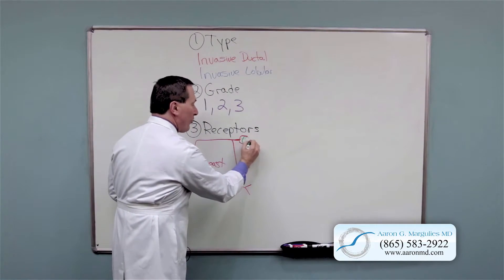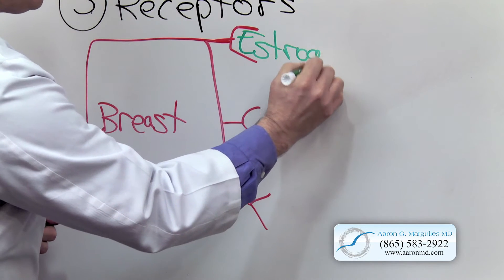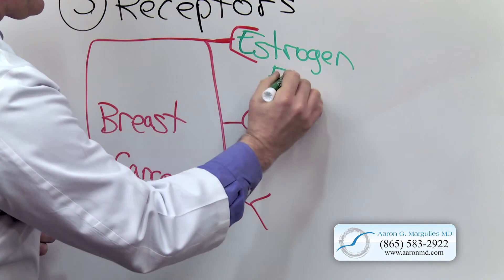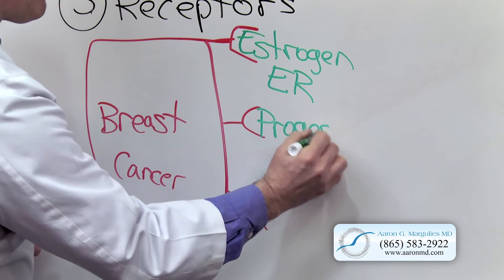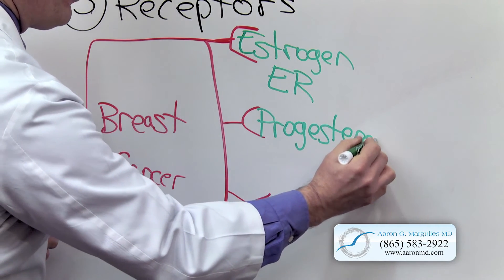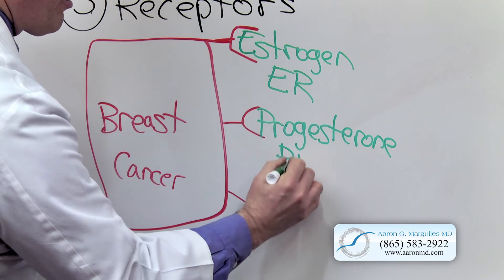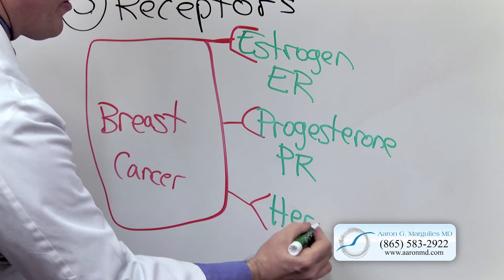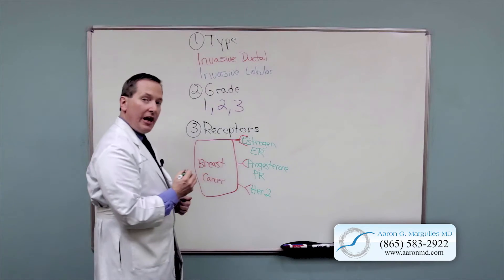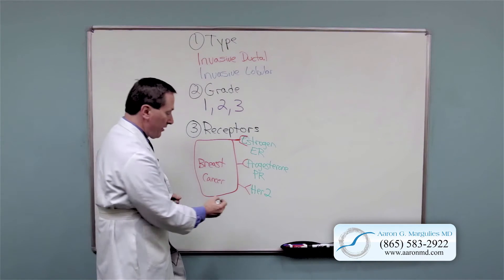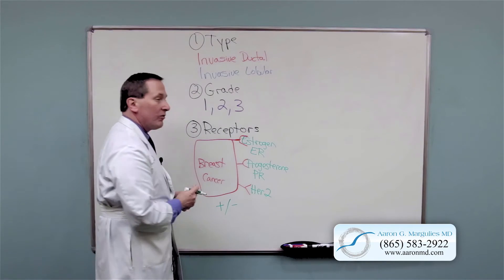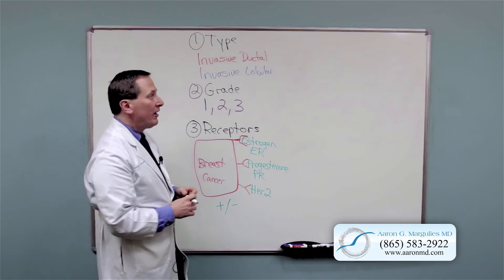We're going to look to see if you have the receptor to estrogen, what we call ER. We're going to look to see if you have the receptor to progesterone called PR. And we're going to look to see if you have the receptor to HER2. And we describe these as either being positive, you have the receptor, or negative, you do not have the receptor.